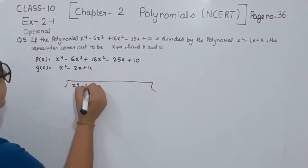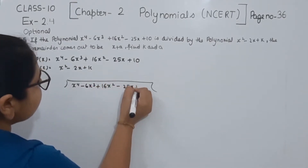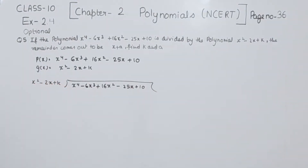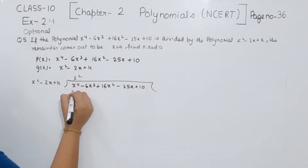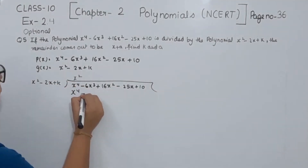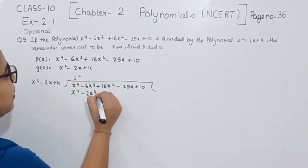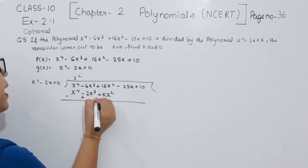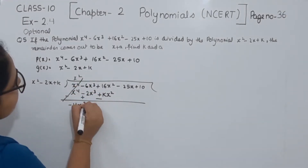We have x to the power 4 minus 6x to the power 3 plus 16x squared minus 25x plus 10, divided by x squared minus 2x plus k. We are having x to the power 4 here, and we multiply to get minus 2x to the power 3, then plus kx squared. Now we change the sign — plus minus minus — and we have minus 4kx to the power 3 here.